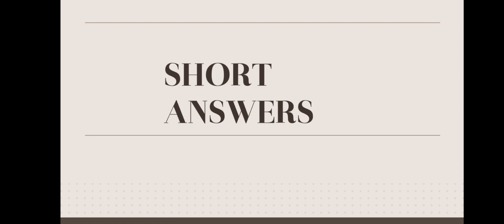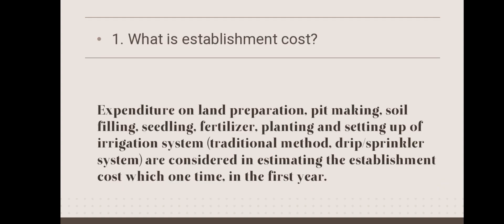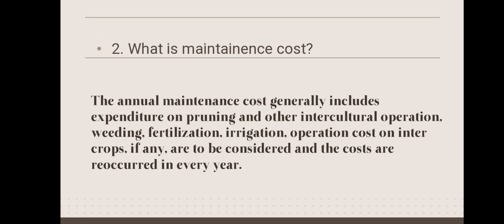Now let us move on to short answers. What is establishment cost? Establishment cost is the expenditure on land preparation, pit making, soil filling, seeding, fertilizer, planting, and setting up of irrigation system — both traditional and drip or sprinkler systems are considered. It is a one-time expenditure in the first year, covering all field preparation activities.